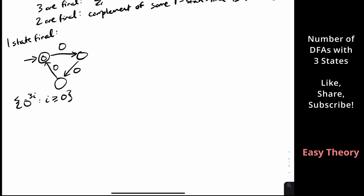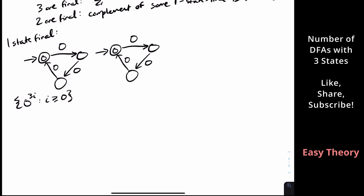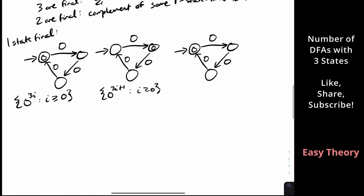Since there's only one transition per state, this cycle structure is the only possibility. We can also make a different state the final state: if the second state is final, we get all strings of length a multiple of three plus one — 0 to the 3i+1 where i is at least zero. Similarly, if the third state is final, we get 0 to the 3i+2 where i is at least zero.